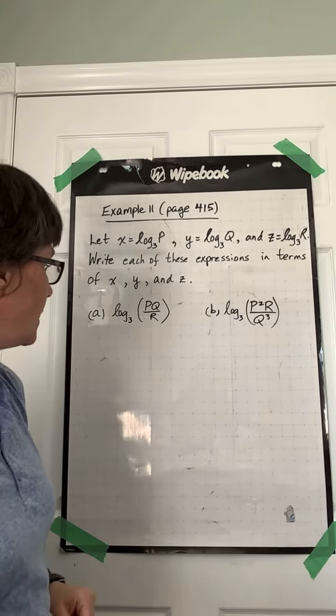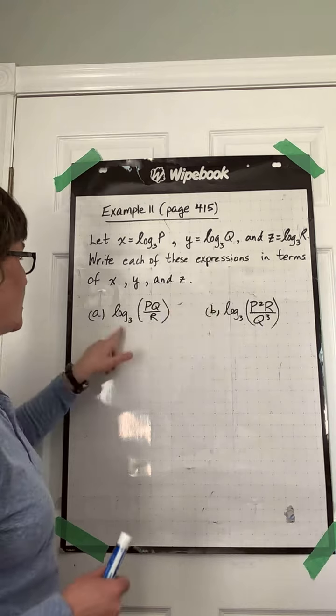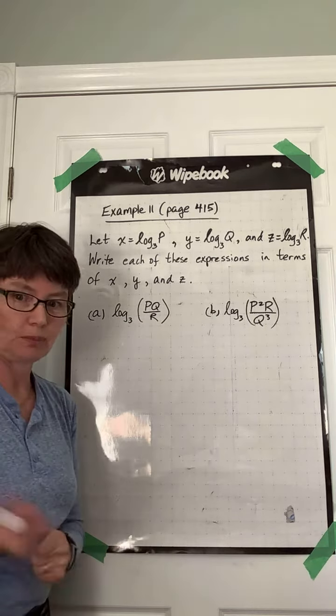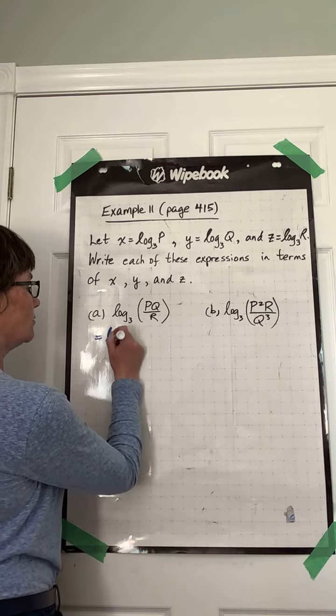So first of all, we have log base 3. These are all log base 3. p, q divided by r. So first of all, we can separate this out using our laws of logs. Log base 3 of p plus log base 3 of q subtract log base 3 of r.